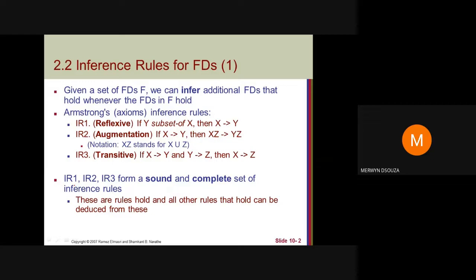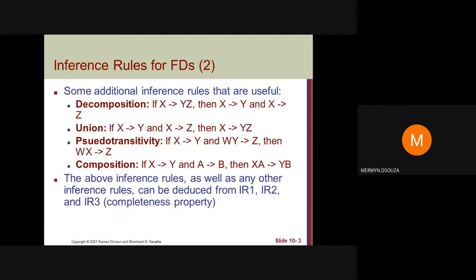Using these three inference rules we can form other rules. Some additional useful inference rules are: the decomposition rule — if X determines YZ, then X determines Y and X determines Z; and the union rule — if X determines Y and X determines Z, then X determines YZ (Y union Z).